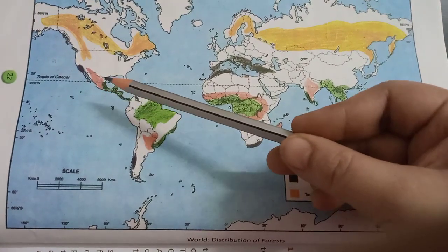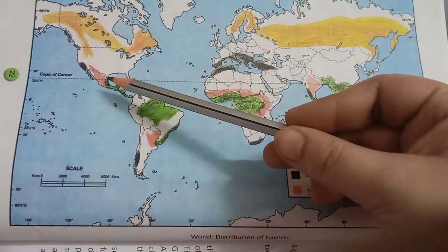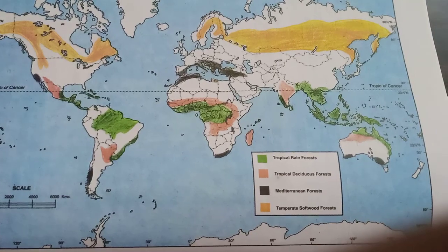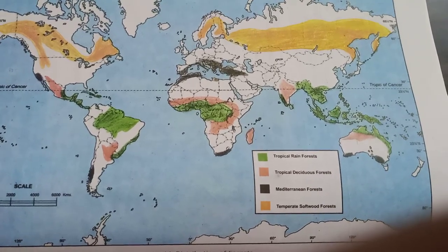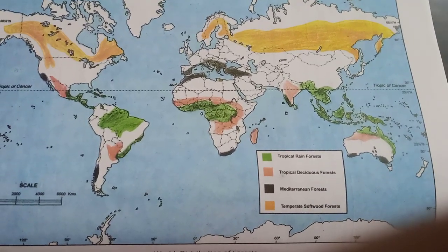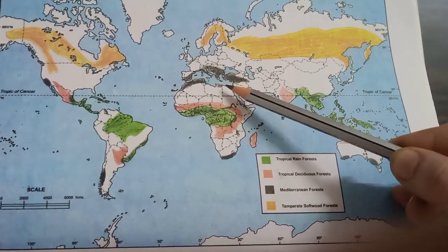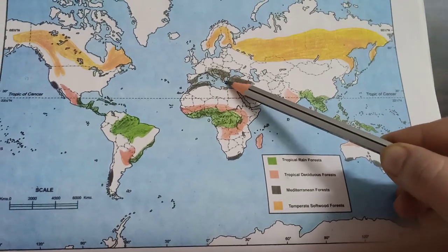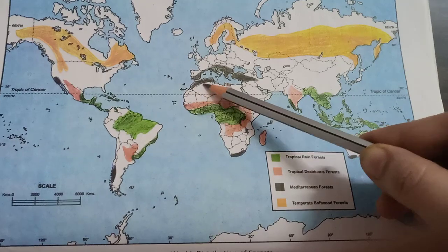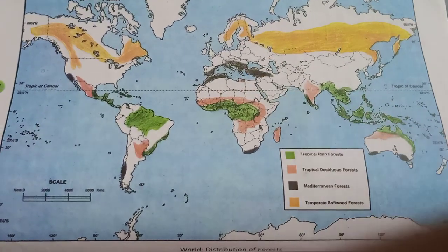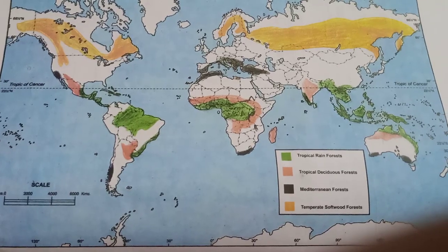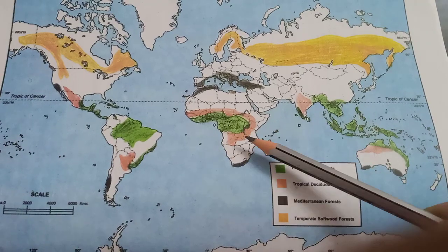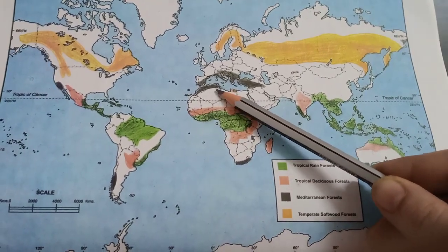Now moving towards the Mediterranean forest — Mediterranean forests are found in the regions near the Mediterranean Sea. You can see the Mediterranean Sea here. The regions shown in black color are the shores of Europe, and also the Asia region and North Africa, all the regions on the side of the Mediterranean Sea having Mediterranean forest.